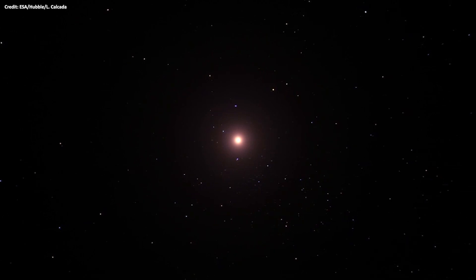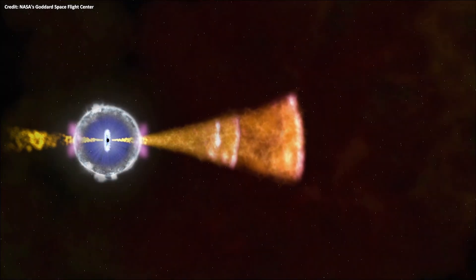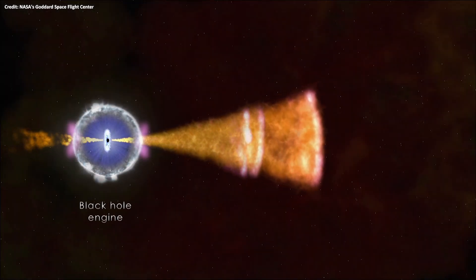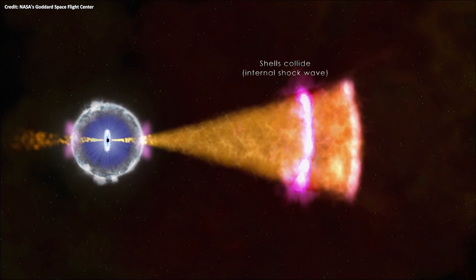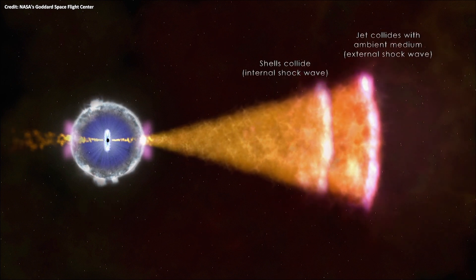When wolf-rayet stars spew their outer layers off into space, their core collapses into a black hole, which then sends out jets of material that slam into the outer material of the star, creating enormously high temperatures and sending off gamma rays.